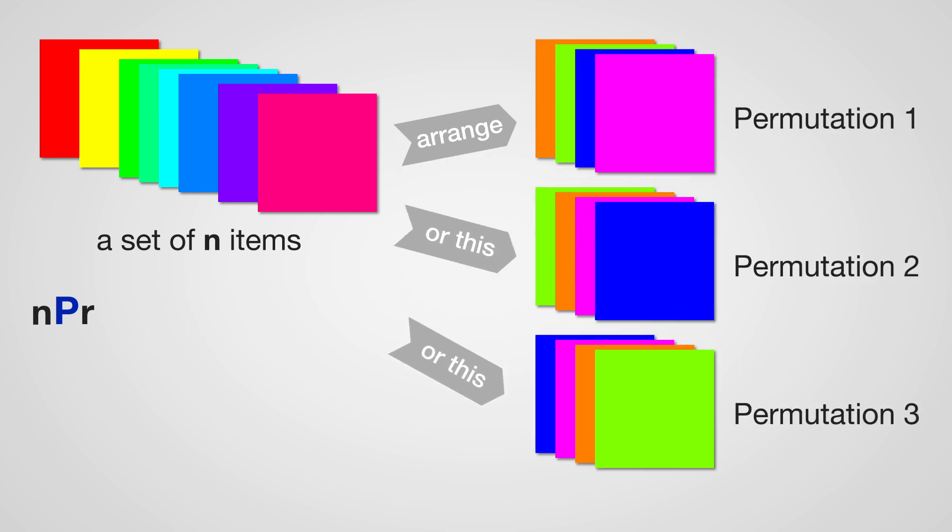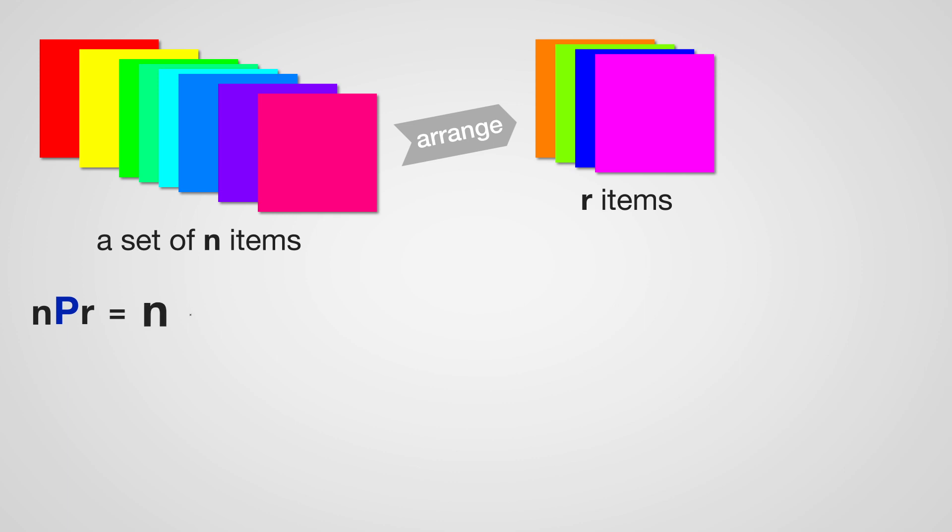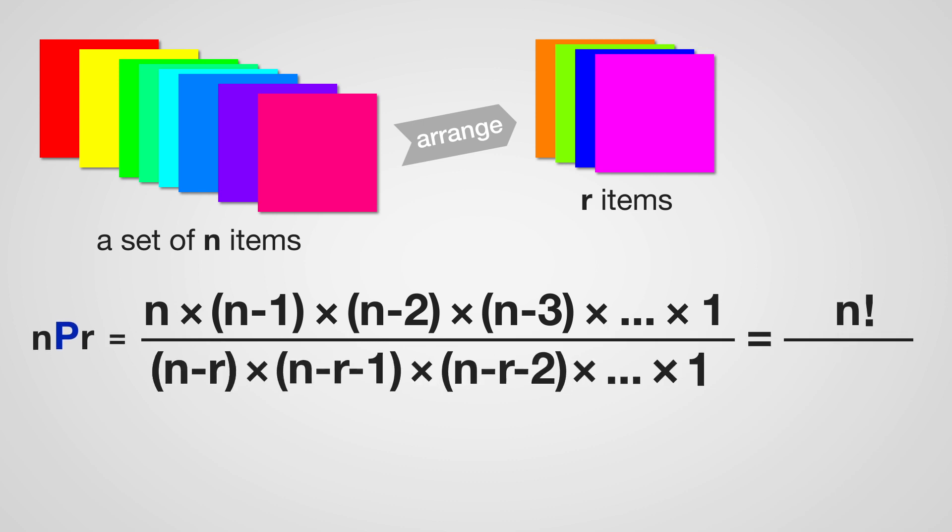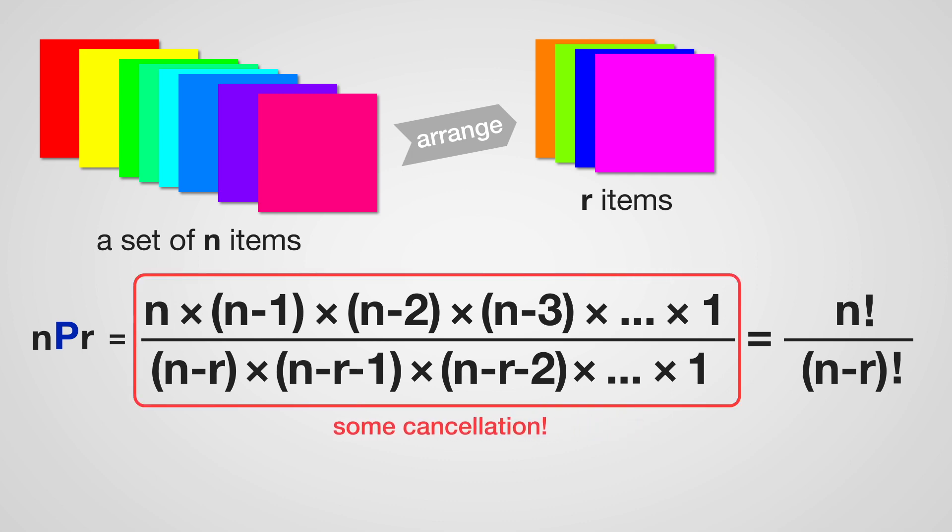It's a straightforward calculation: multiply it down to one, or n factorial (it's not an exclamation), divided by n minus r factorial. You'll have some cancellation.